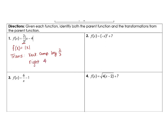For number 2, it looks like your parent function would be x cubed. Then talking about your transformations, the first part would be reflect across the y-axis, and then you would be moving up 7.